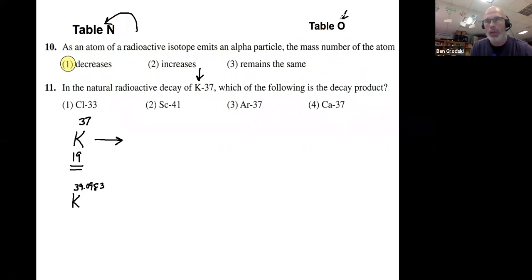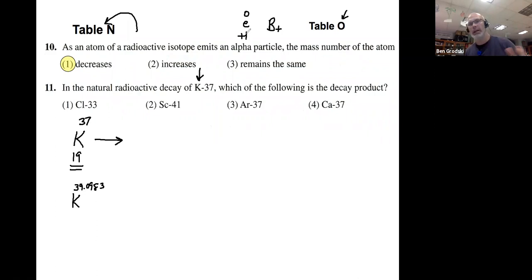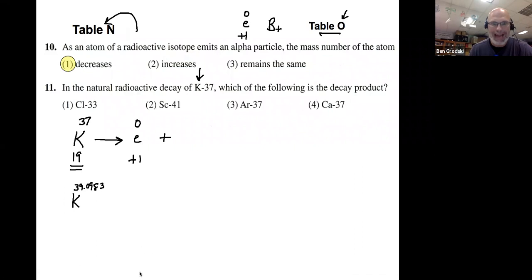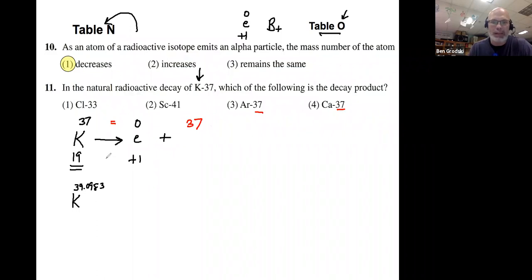A positron is a B-positive — a zero E plus one. It's the anti-electron, the antimatter of an electron, with the same mass but opposite charge. So we write that as zero E plus one from Table O. Then we do the math: what number plus zero is 37? That's 37 for the mass. What number plus one is 19? That's 18. So the decay product has mass number 37 and atomic number 18.